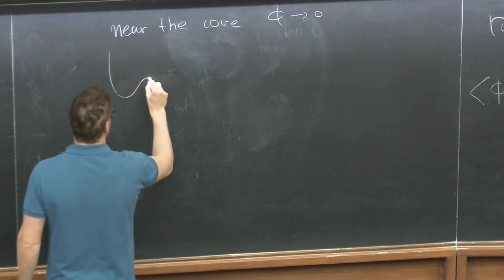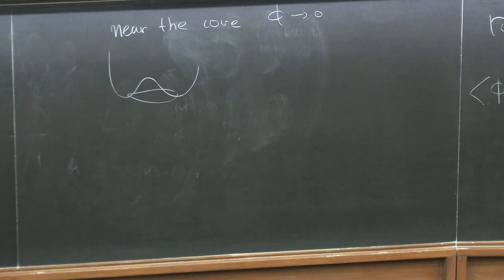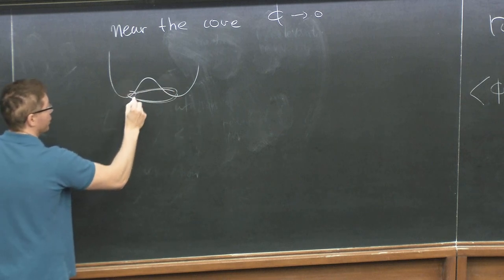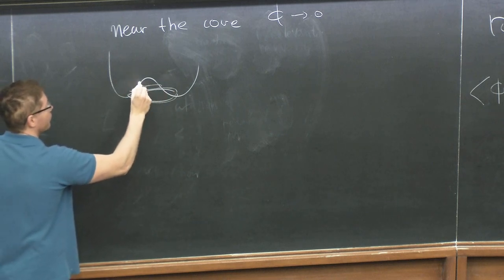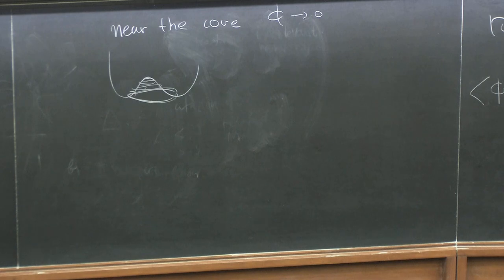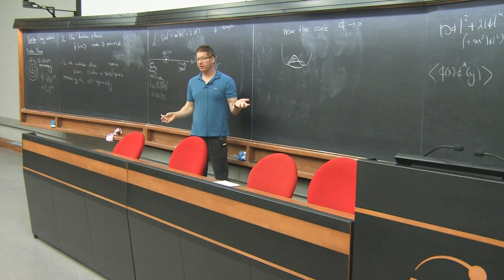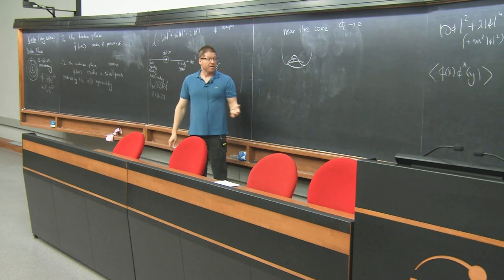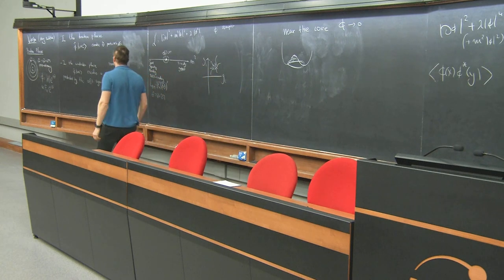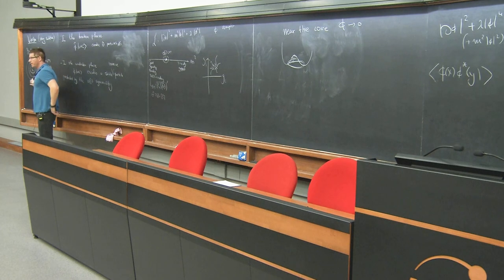More pictorially, the potential in the broken phase is like a Mexican hat potential because the mass squared is negative. What happens around the vortex is that you go around the Mexican potential, but when you get closer and closer to the core, you climb up this hill until phi goes to zero. So you have something that's just swirling around, but when you get very close to the core it goes up to the top of the hill. Away from the core, it's just swinging at the bottom of the potential, because that's what it wants to do.